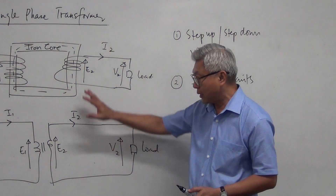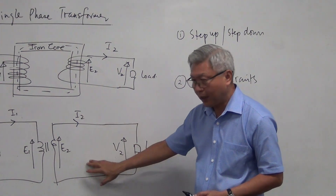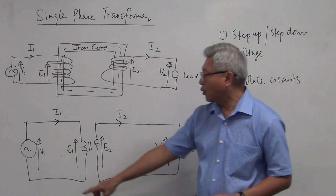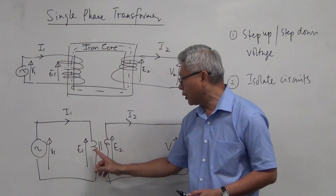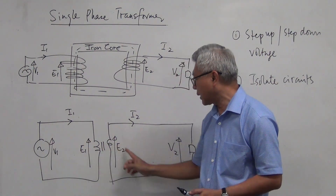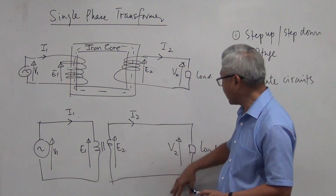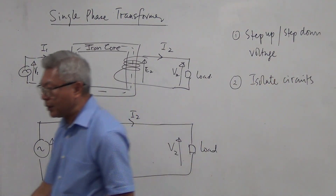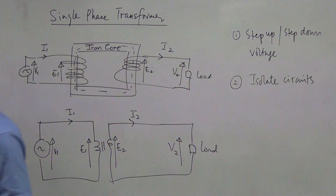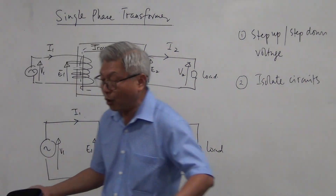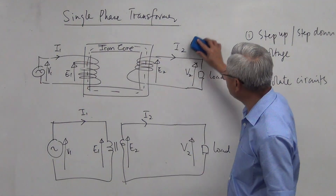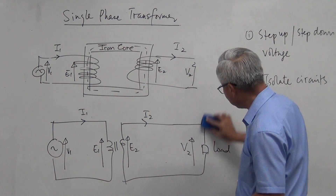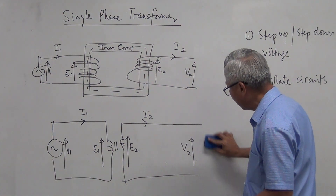Let's talk about the ideal transformer diagram — the equivalent circuit. We draw an AC power supply, we have a primary coil, we have a secondary coil. A transformer can be open circuit as well — just like a battery, you do not need anything connected; it's open circuit. So I can leave it open circuit and draw my transformer like that.